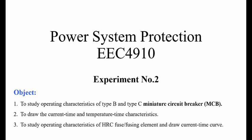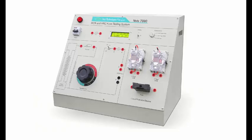The object of experiment number two is to study operating characteristics of type B and type C miniature circuit breaker (MCB), to draw the current-time and temperature-time characteristics, and to study operating characteristics of HRC fuse and draw current-time curve. Before diving into this experiment, it is suggested that you go through the theory part.